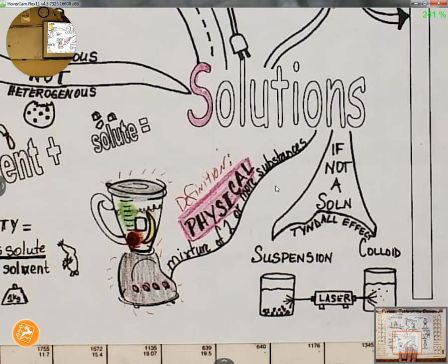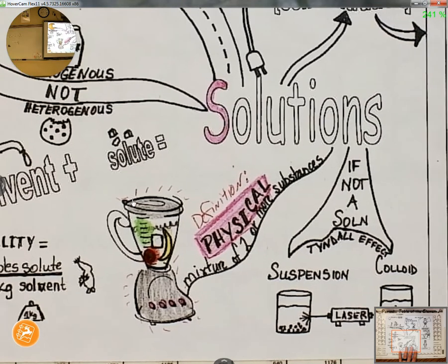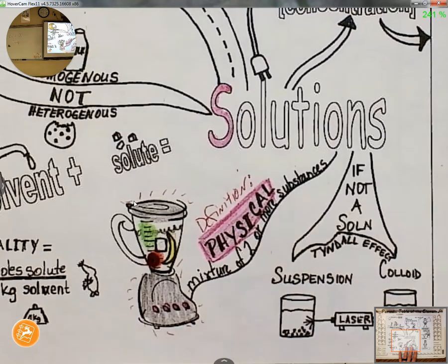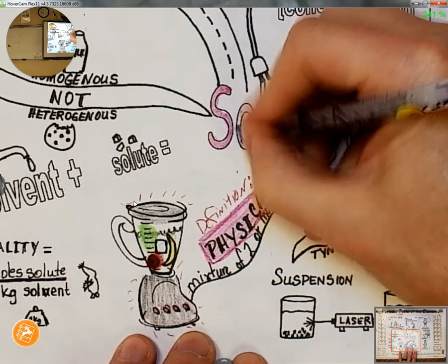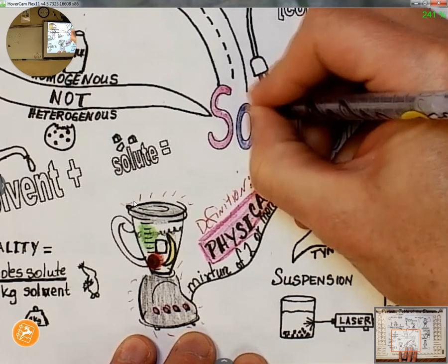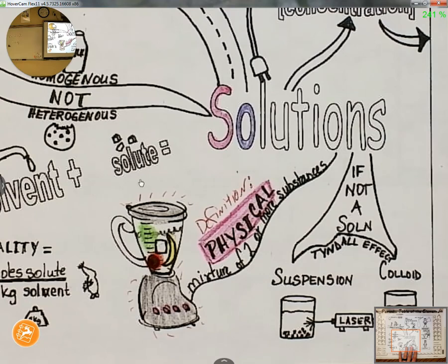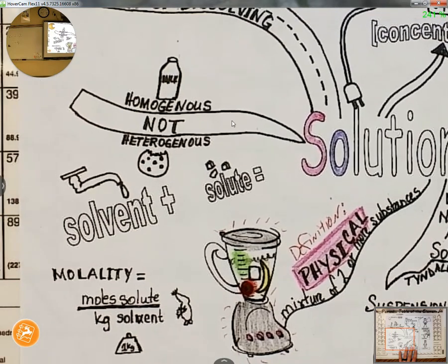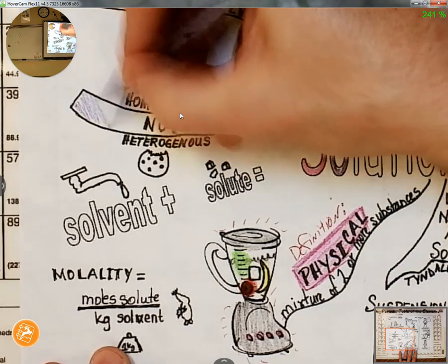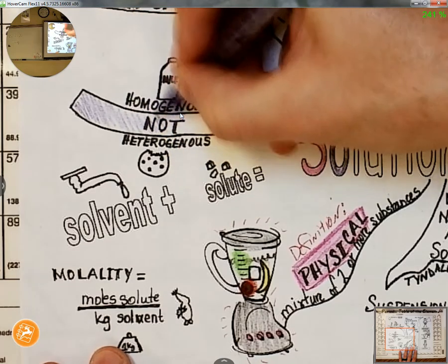I'll look high and low for little chunks of banana and not be able to find them because this blender is the best blender ever. So I've got all these substances mixed so well, and that brings me to color another letter in 'solutions.' The kind of mixture I've got here is a homogeneous mixture, not a heterogeneous mixture.